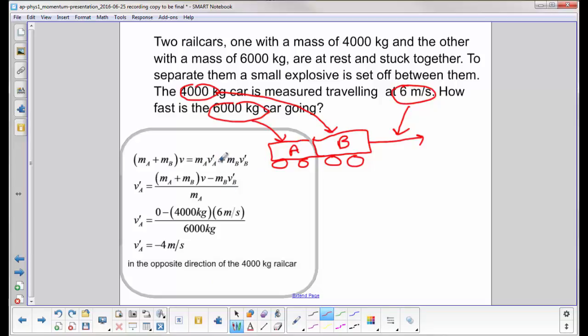So I look at this equation. I know I have to put this guy on the other side. So there's your minus MB VB prime, and then divide through by MA. I substitute in my numbers. My initial velocity is zero.